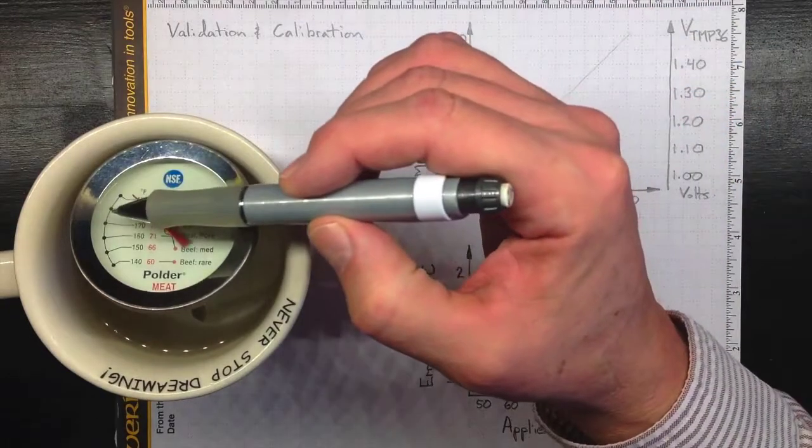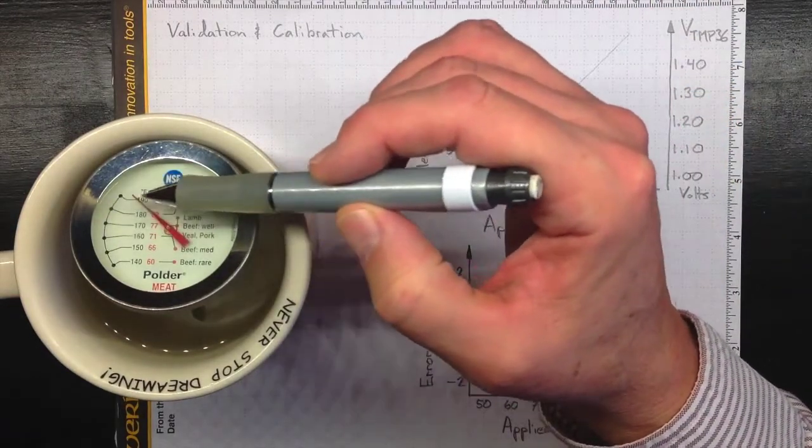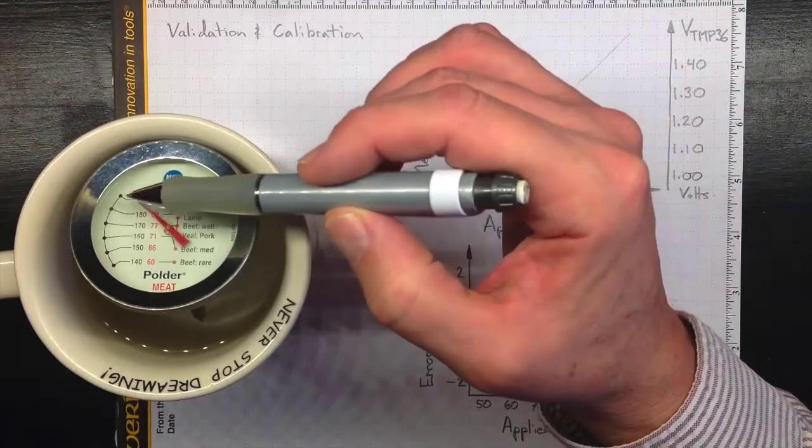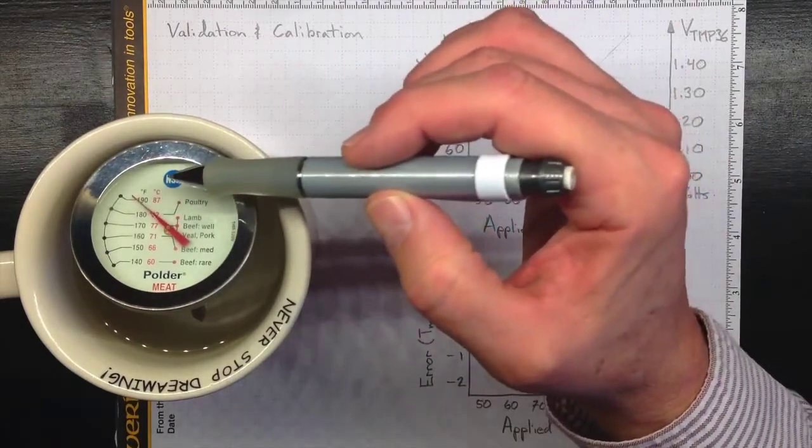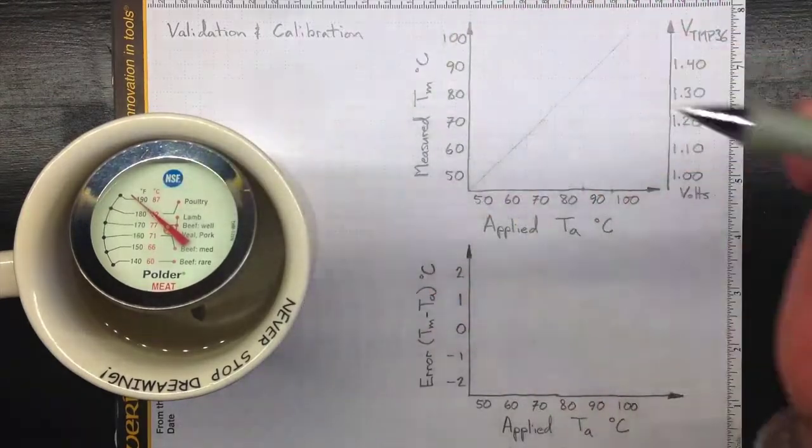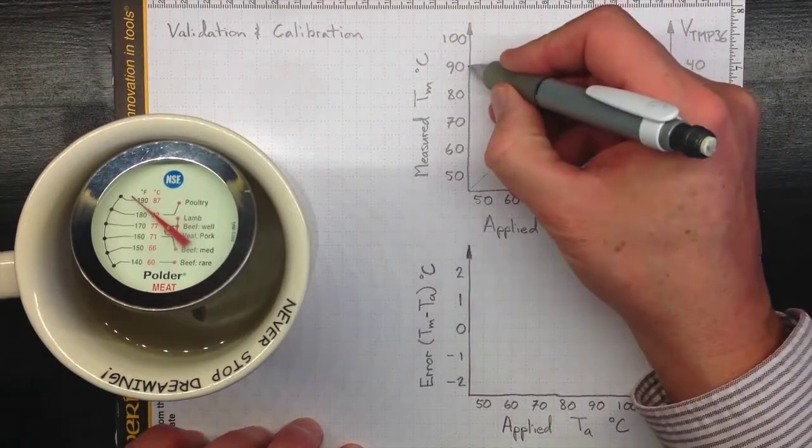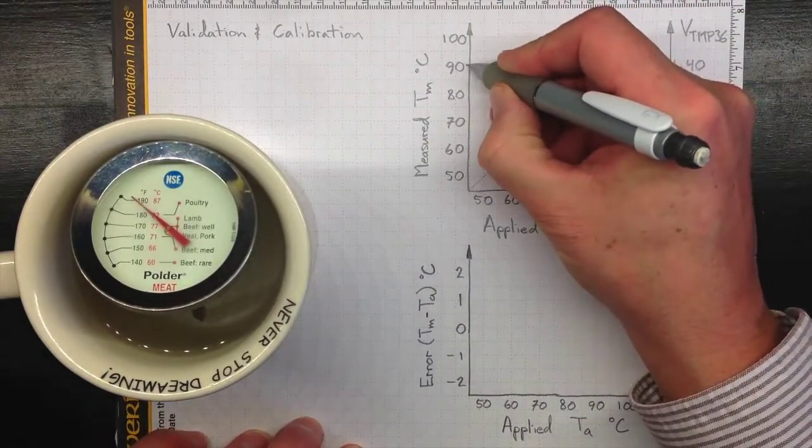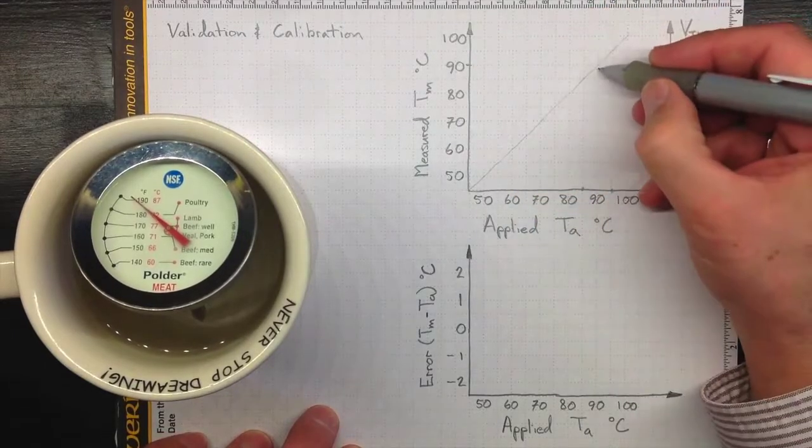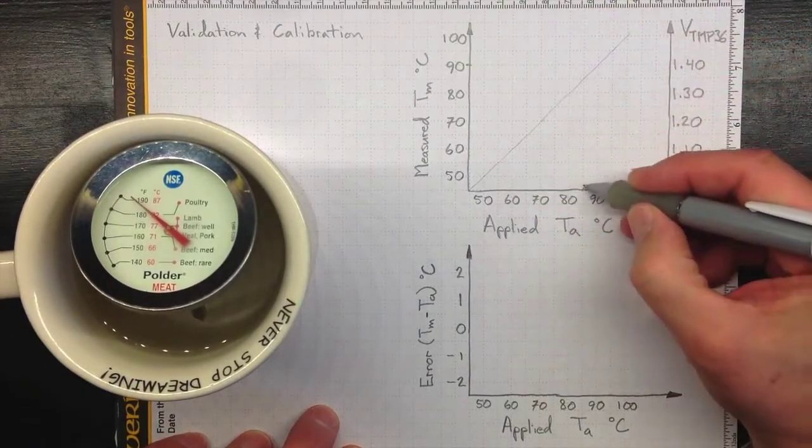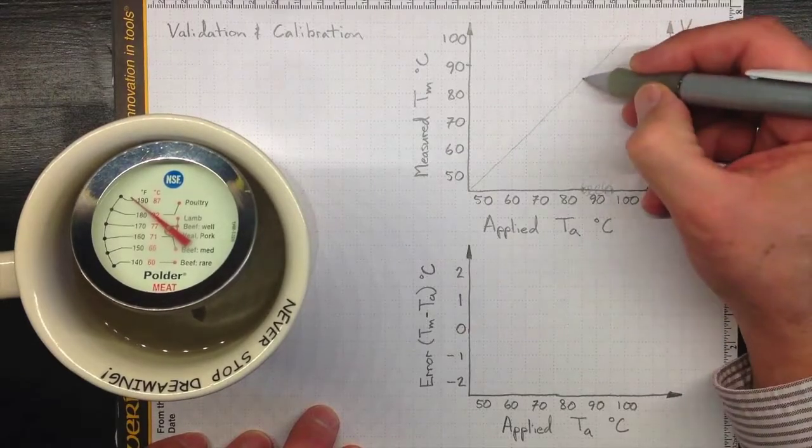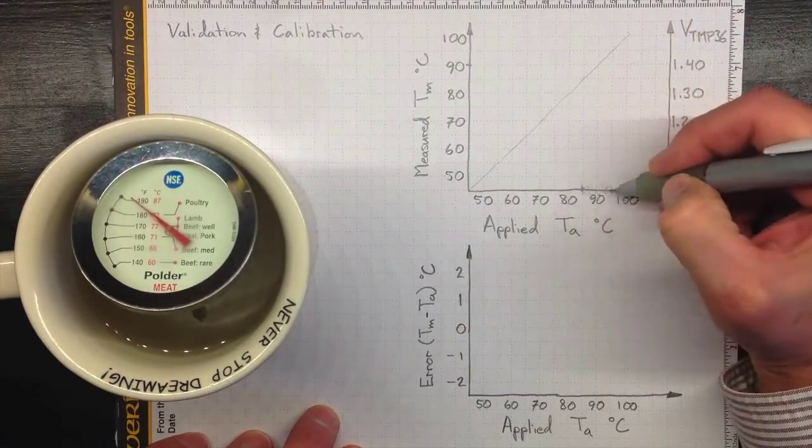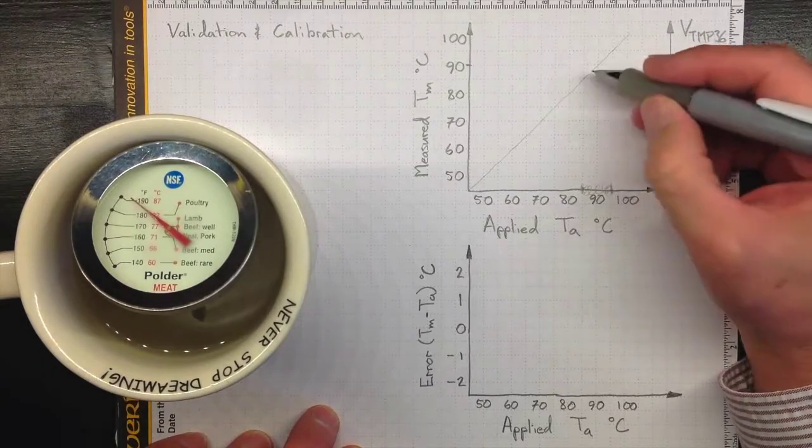That looks like about half a division above the 190F mark. So, that would be about 195F or about 90 degrees Celsius. That's a pretty believable number. I got 90 degrees Celsius, and I know that I applied somewhere in here a temperature somewhere between 85 and 95 is my best estimate.